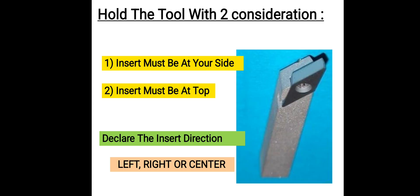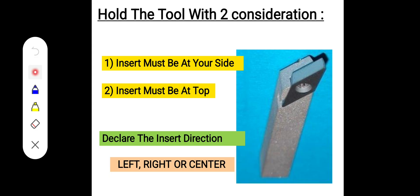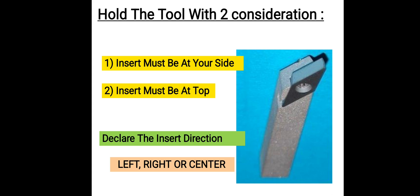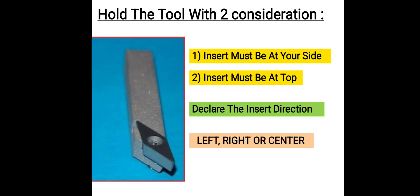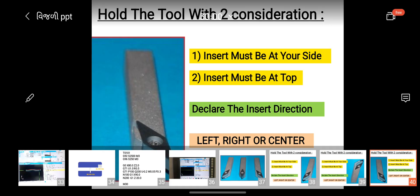In the second example, we hold the tool differently. Checking the first consideration — insert must be at your side — the insert is not at our side; it is in the opposite direction. So the first consideration is false and we cannot determine the type of tool. We must first verify both two considerations before identifying the tool type.